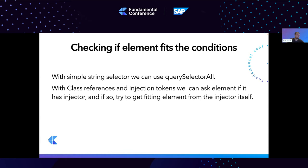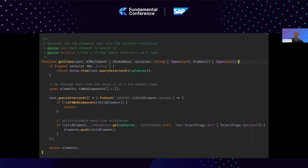The second question is how we can check if an element actually fits the conditions. For simple selectors, this can be done with querySelectorAll — just pass the CSS selector to the method and it returns all elements that satisfy the condition. For class names and injection tokens it's more complex: we ask the element's injector, which we exposed previously, whether it can return a value. If it does, the element fits the condition and is added to the query list.